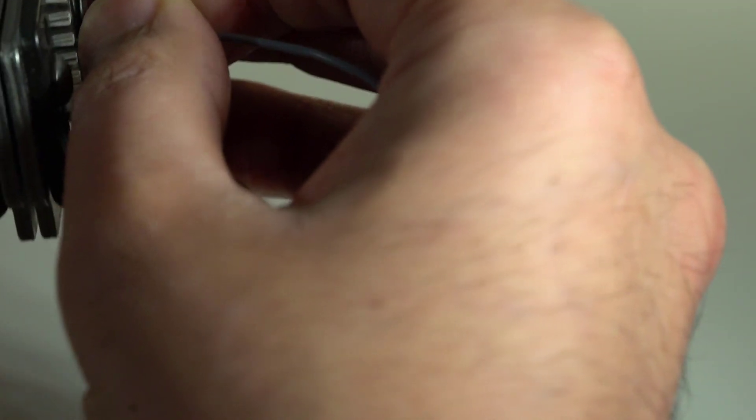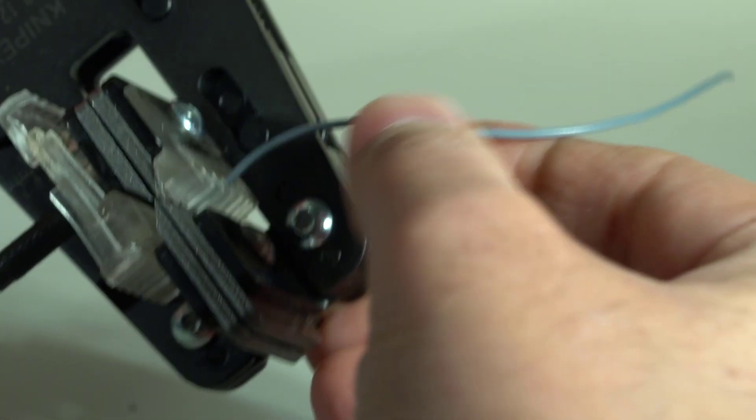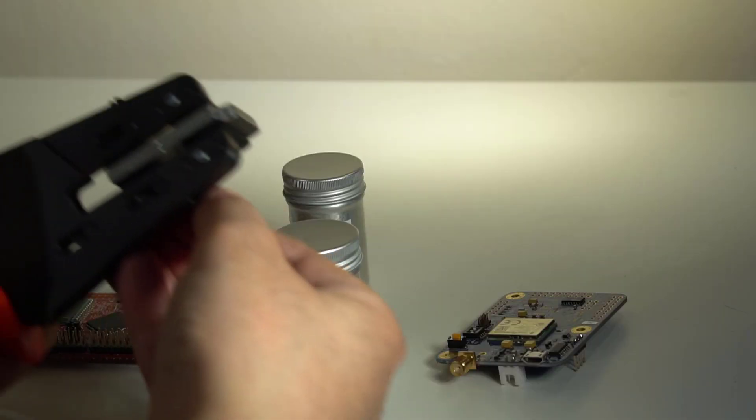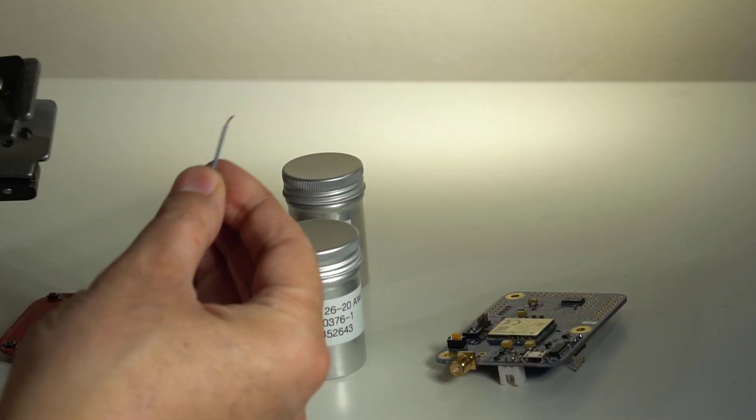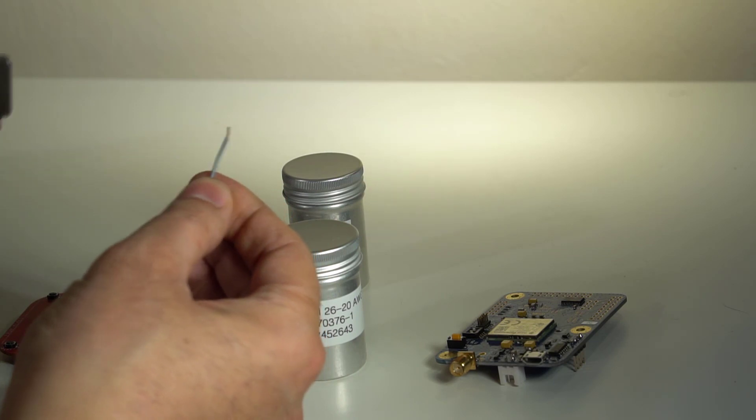First things first is to strip that. One, two, three, four. It's a little bit hard to get all of this on camera, but you can see what I'm doing there. I've discussed this tool, this wire stripper, in a different video actually. I really like it. It's great.